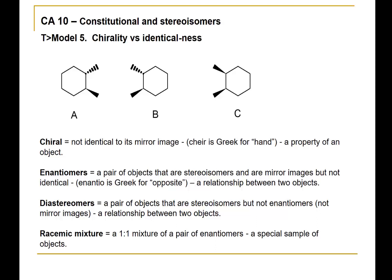Here we also define the term racemic mixture, which is a one-to-one mixture of a pair of enantiomers. As you're going to see, the result of many chemical reactions is a racemic mixture — that is, both enantiomers are formed. Because this happens so often, it's important to have a term for it.